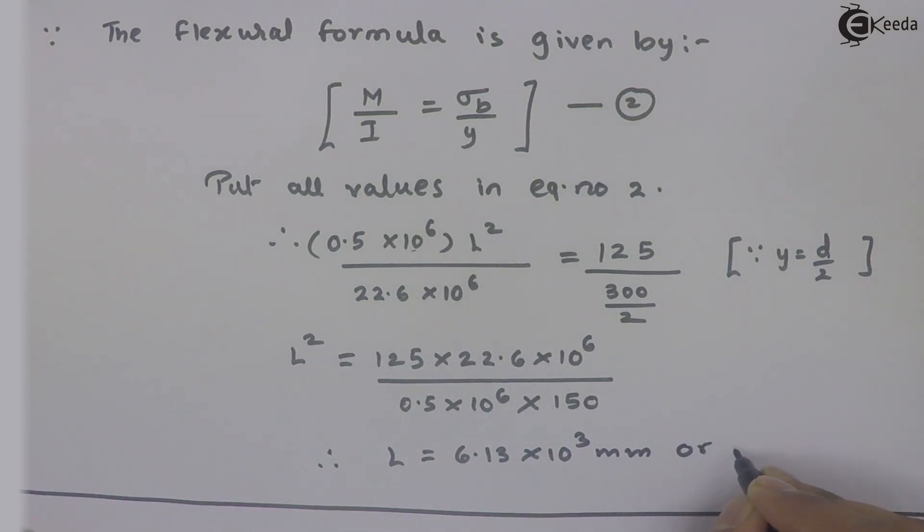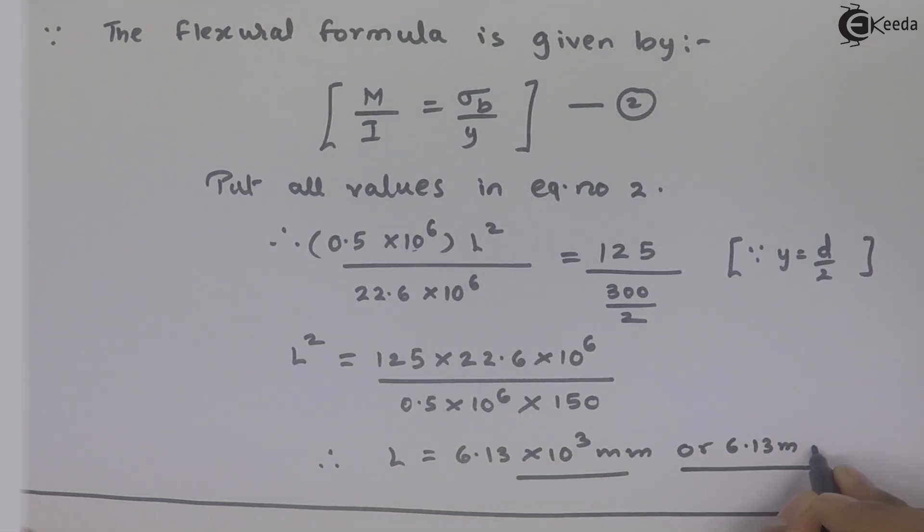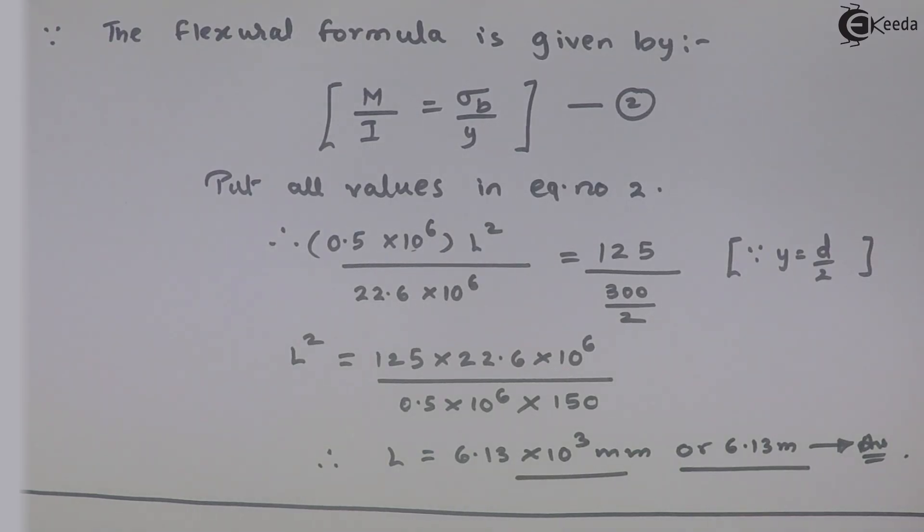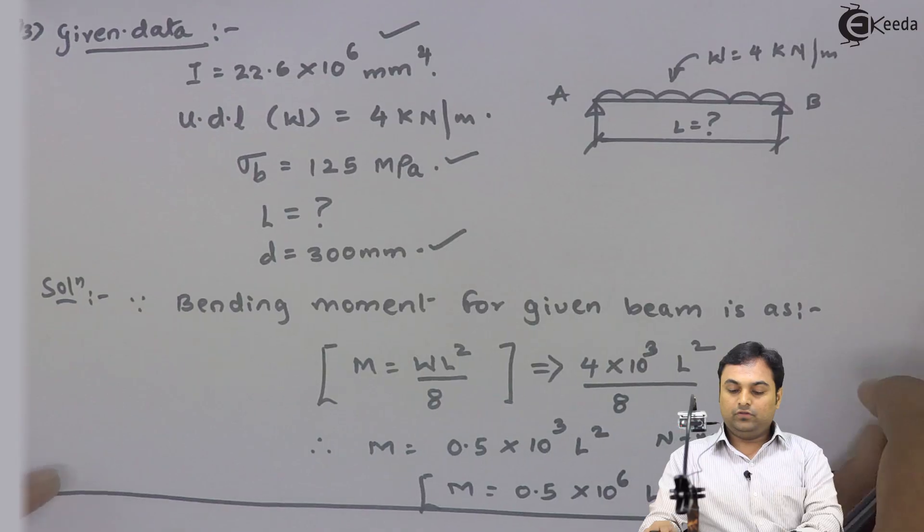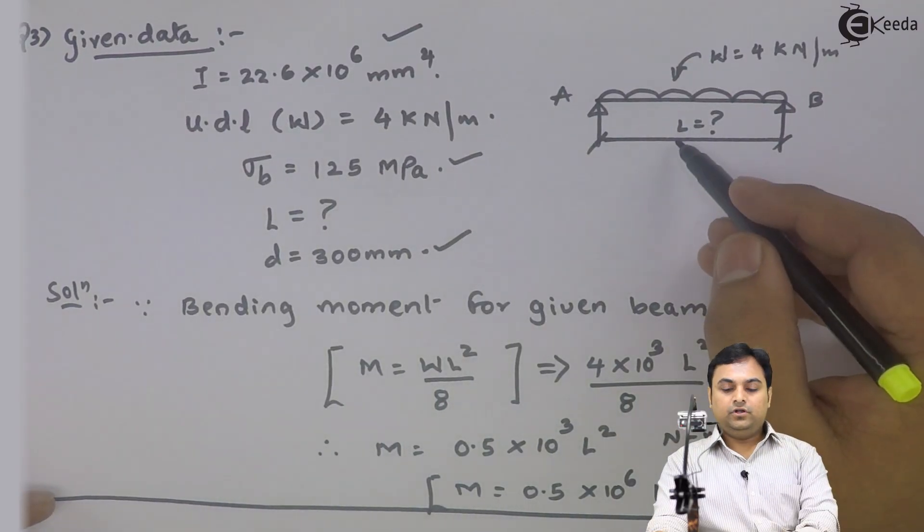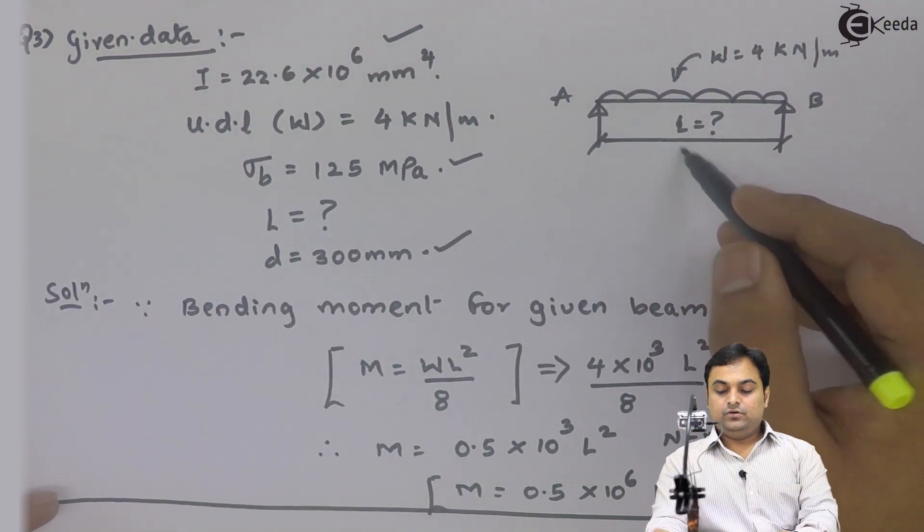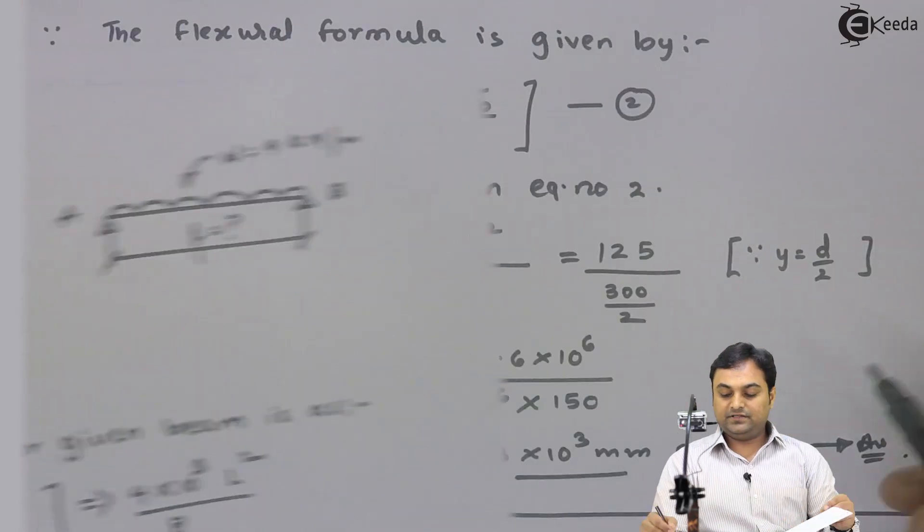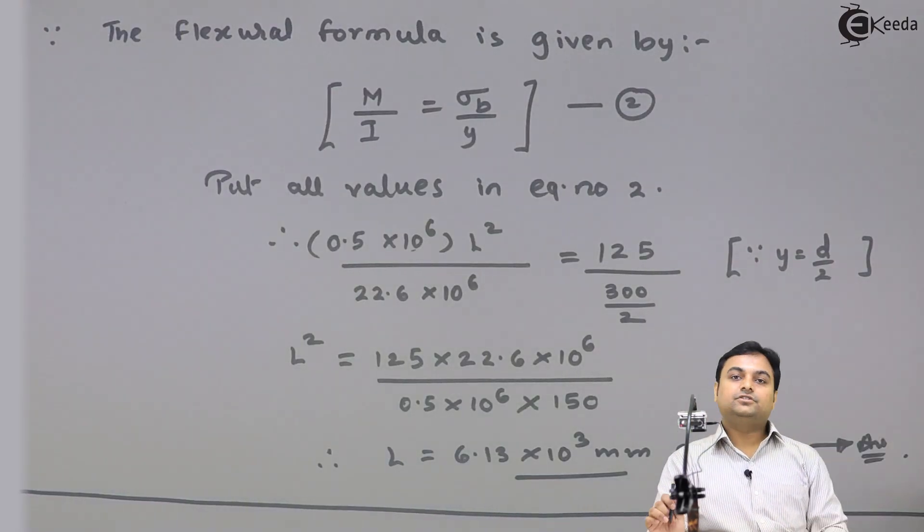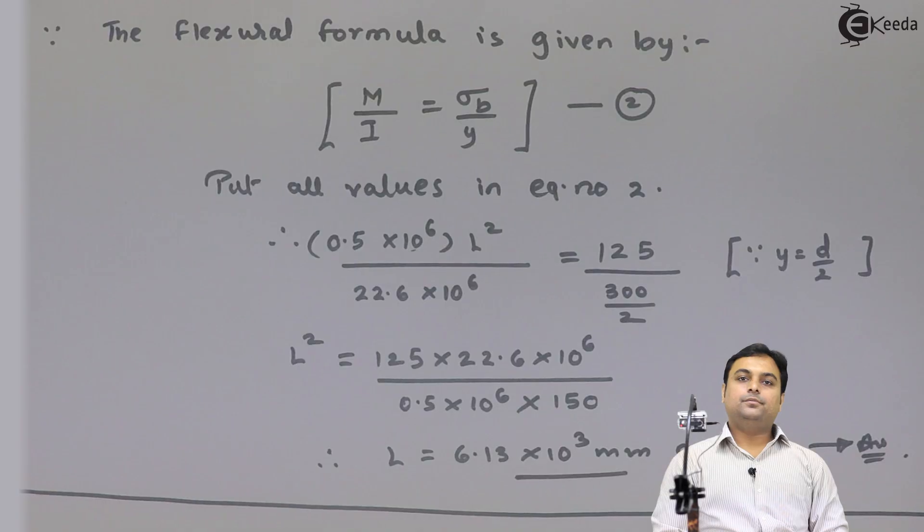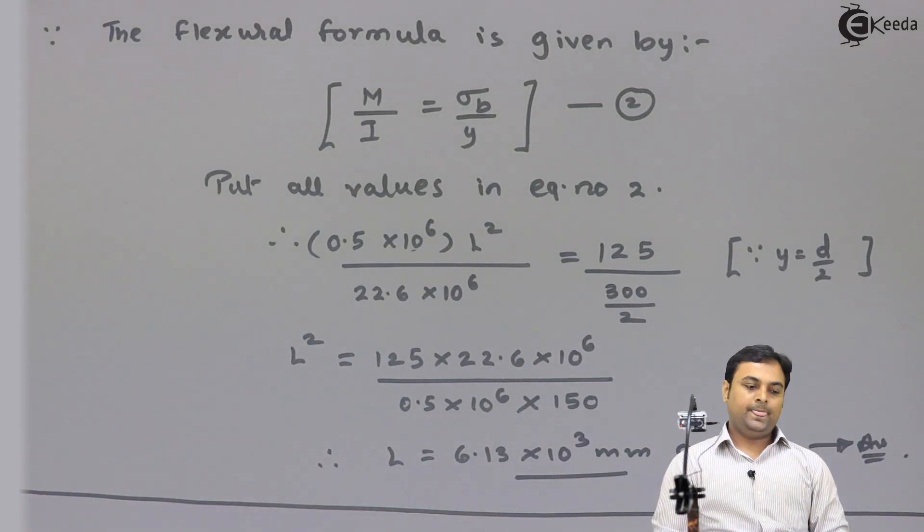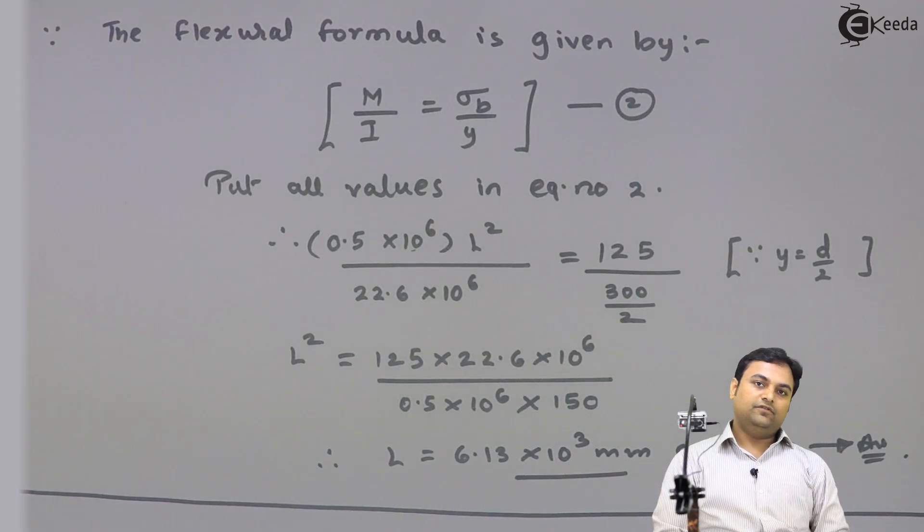So that is my answer. In this question we were asked the length of the simply supported beam carrying UDL. So length of the simply supported beam which is carrying a UDL, we got the answer. That answer is 6.13 meters. So with this we have completed question number 3 for today. Now let us go on to the fourth question.